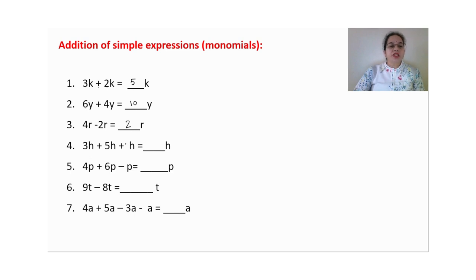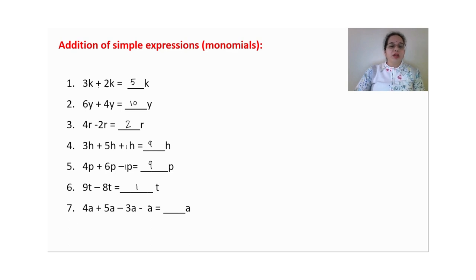For 3h plus 5s plus h: if there is no number written, the coefficient is 1. So 3 plus 5 is 8, plus 1 is 9. Similarly, if no number is there it means 1: 4 plus 6 is 10, 10 minus 1 is 9, 9 minus 8 is 1. Writing '1T' or just 'T' is both correct — we generally don't write the 1. Again: 4 plus 5 is 9, minus 3 is 6, minus 1 is 5, so the answer is 5a.